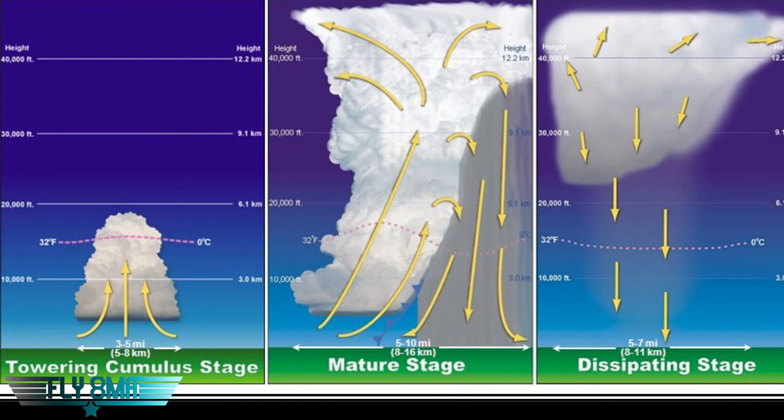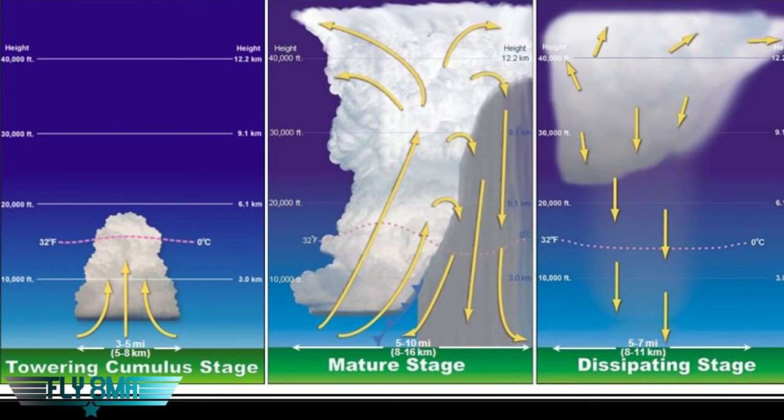These three key distinct stages are: the towering cumulus stage — this is stage one where you have very strong updrafts that can exceed 3000 feet per minute. This is best explained as a bubble of warm rising air that leaves a cloudy trail in its wake. You get that towering cumulus stage, the very tall cumulus cloud forming. That is mostly updrafts, up to 3000 feet per minute — very strong updrafts.